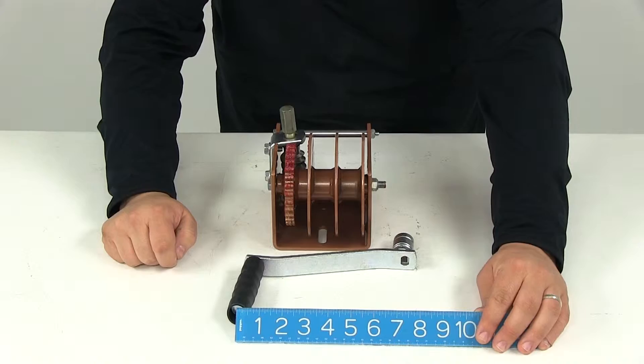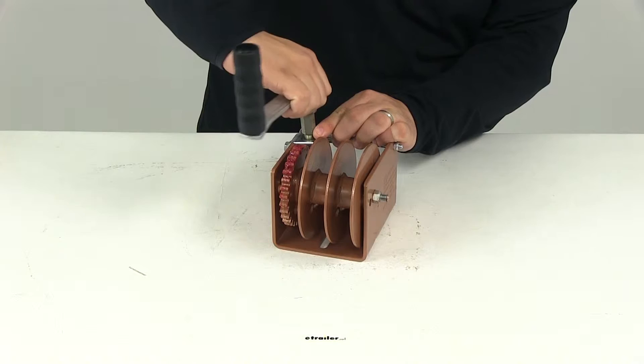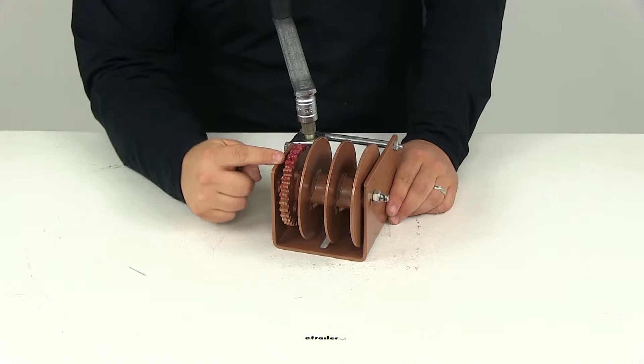The winch is going to have a gear ratio of 30 to 1. What that means is for every 30 full turns of our handle the gear or the drum is going to complete one full rotation.